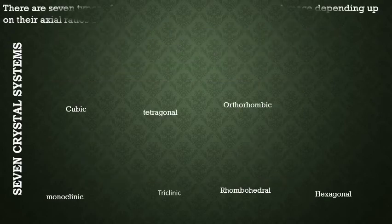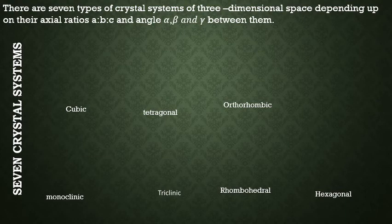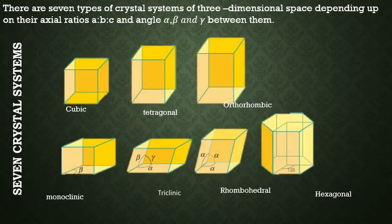There are seven types of crystal systems of three dimensional space, depending upon their axial ratios ABC and angles alpha, beta, and gamma between them. There are cubic, monoclinic, triclinic, tetragonal, orthorhombic, rhombohedral, and hexagonal.